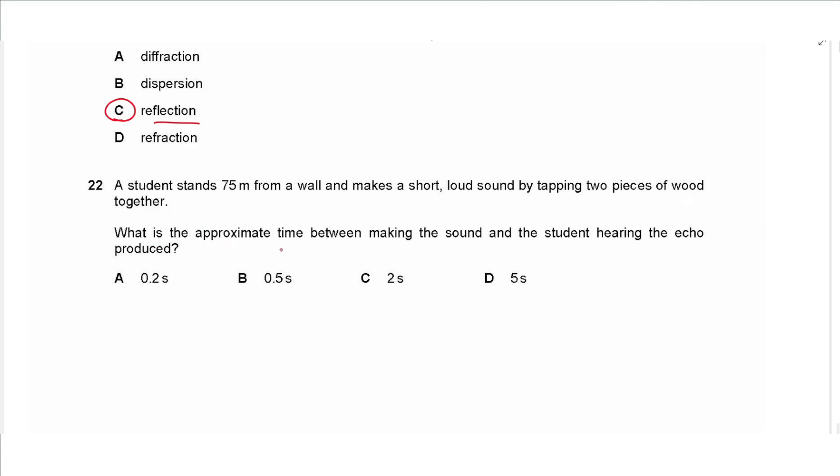Question 22 says a student stands 75 meters from a wall and makes a short loud sound by tapping two pieces of wood together. What is the approximate time between making the sound and the student hearing the echo? So speed is equal twice the distance over time. So if we know the average speed of sound in air is equal to 340 meters per second and the distance from the student to the wall is 75, we can say that 340 is equal to 2 times 75 divided by the unknown time. We replace these two, so the time will be 2 times 75 over 340. That will give a value of 0.4411 approximately, so the nearest one is 0.5 seconds, so we choose B.